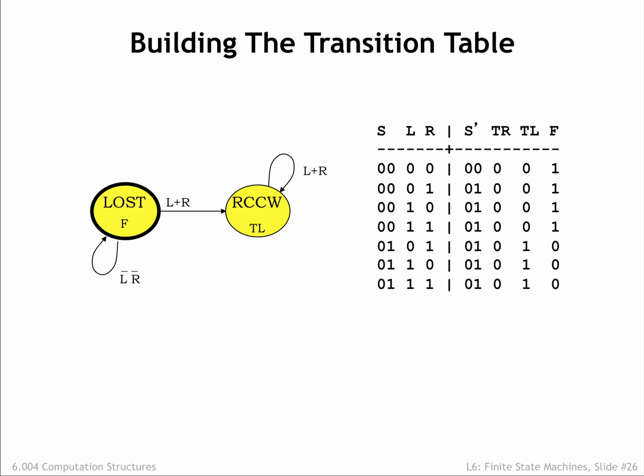Now we can tackle the transitions from the rotate counterclockwise state. If either antenna is touching, the next state is again rotate counterclockwise. So we've identified the matching values for the inputs and added the appropriate three rows to the transition table. We can continue in a similar manner to encode the transitions one by one.